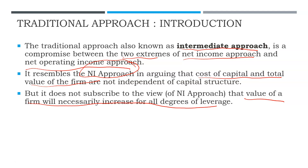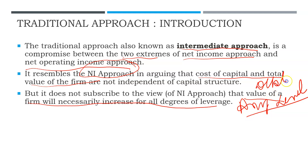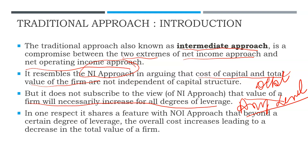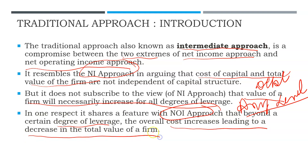It contradicts the Net Income Approach which said you can increase debt to any level. This theory does not support that any level concept. According to this theory, debt contributes only up to a certain level - that is one key difference. On the other hand, it also matches the Net Operating Income Approach because that theory said that beyond a certain level of leverage, the overall cost increases leading to a decrease in total value of the firm.